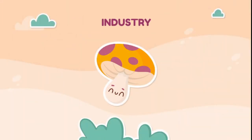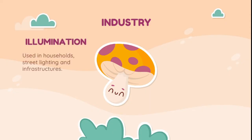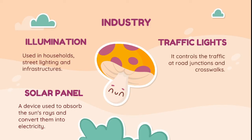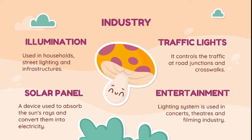Visible light is also applied in industries, specifically in illumination — used in households, street lighting, and infrastructures. Solar panels are devices used to absorb the sun's rays and convert them into electricity. Traffic lights control traffic at road junctions and crosswalks. In entertainment, lighting systems are used in concerts, theaters, and the filming industry.